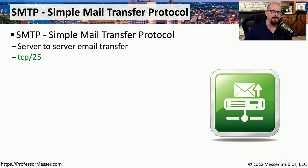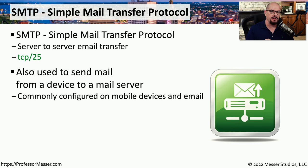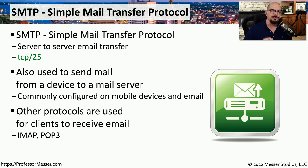There are probably millions of email servers on the internet, and the protocol those email servers use to communicate with each other is the Simple Mail Transfer Protocol, or SMTP. SMTP commonly uses TCP port 25. Not only is SMTP used to communicate between mail servers, but it's also used for mail clients to send mail to a mail server. Although SMTP is used to send mail, receiving mail is done using a completely different set of protocols. If you look at your email client, you're probably using IMAP or POP3 to receive mail and SMTP to send mail.